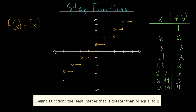Between minus four and minus three, all values round up to negative three, not including the endpoint since negative four equals negative four. Extending the graph further, you can see it looks like a staircase — we wouldn't actually draw the dashed lines, but they help complete the picture showing that you're going up an infinite set of stairs.